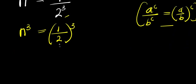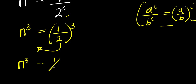So from here, I can move this term over and form a cubic equation: n to the power of 3 minus (1 over 2) to the power of 3 equals 0.